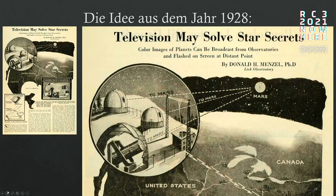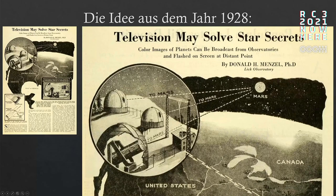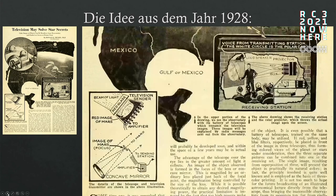The idea is from the year 1928. Here's an old article from Donald Menzel, a US-American who had the idea. You can see three domes of observatories with telescopes, and he wanted to look at Mars, collecting information from the telescopes. He wanted to transmit it over telephone lines across longer distances to make it visible.